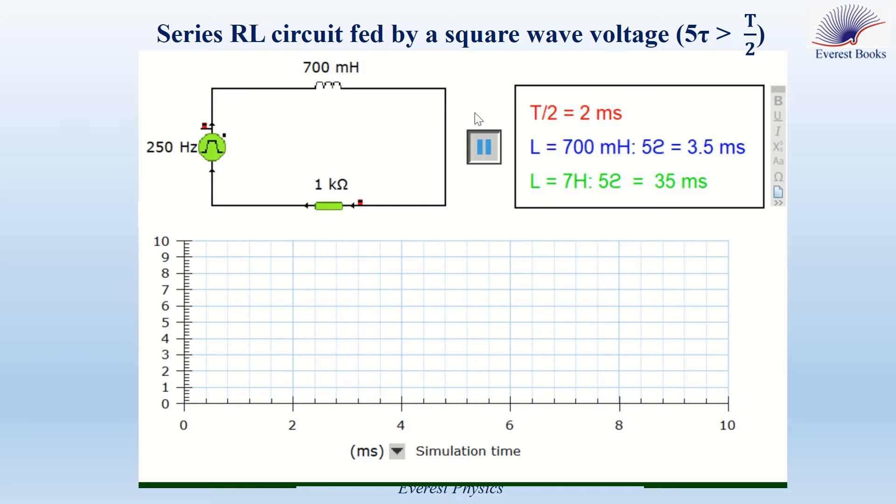Therefore, the growth and decay processes of the current need 3.5 ms to reach steady state. Since 3.5 ms > 2 ms, the steady state is not attained.